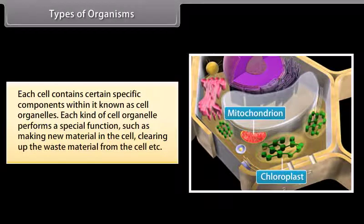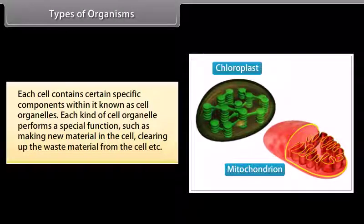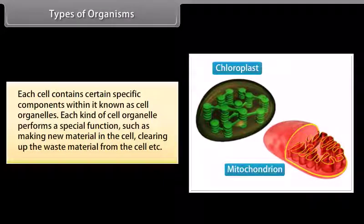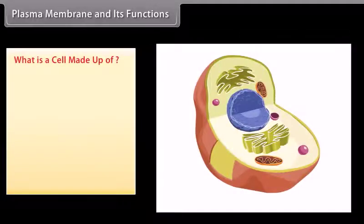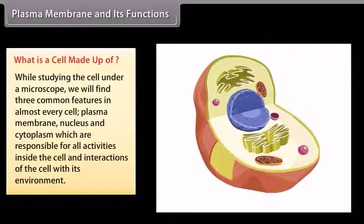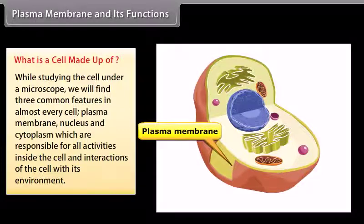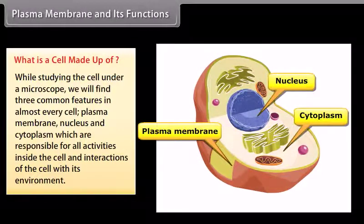Each kind of cell organelle performs a special function such as making new material in the cell or clearing up the waste material from the cell. While studying the cell under a microscope we find three common features in almost every cell: plasma membrane, nucleus, and cytoplasm, which are responsible for all activities inside the cell and interactions of the cell with its environment.